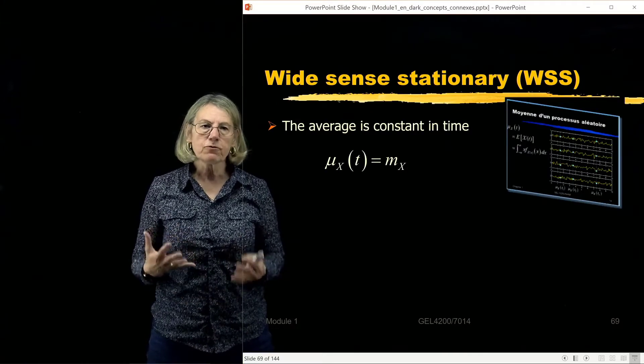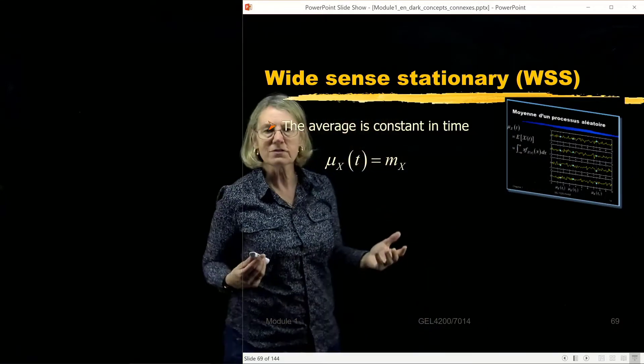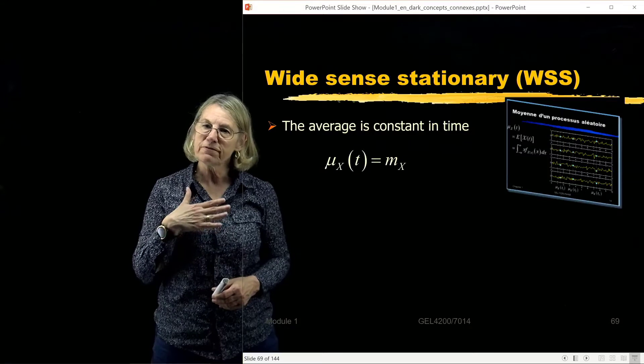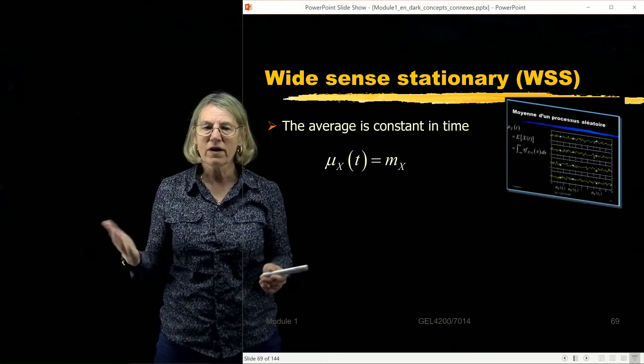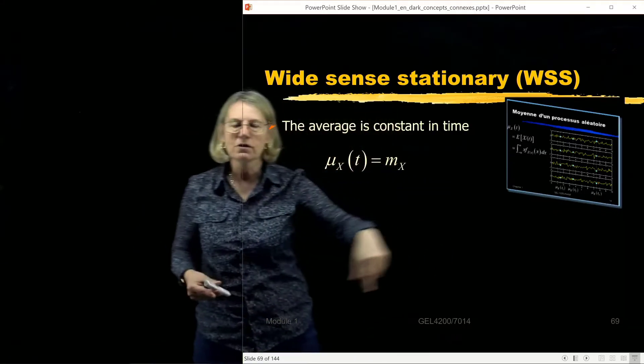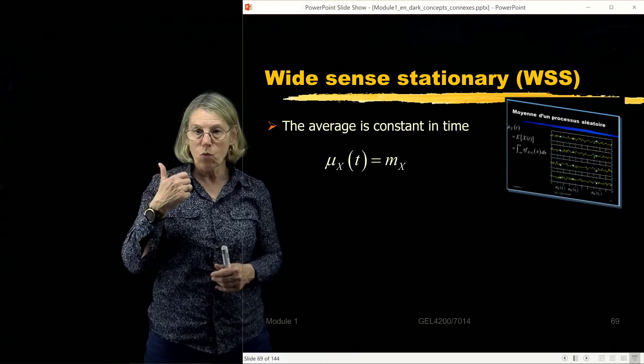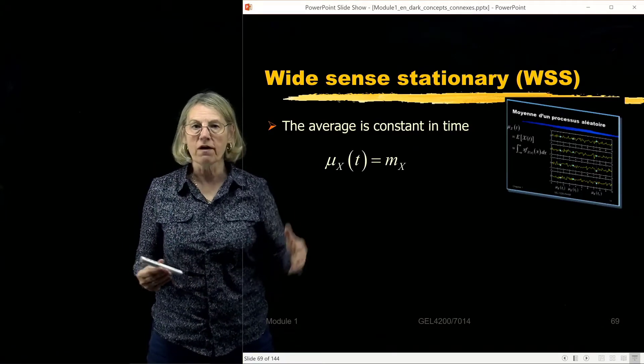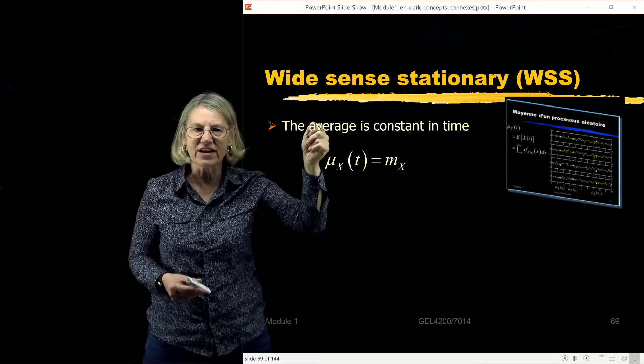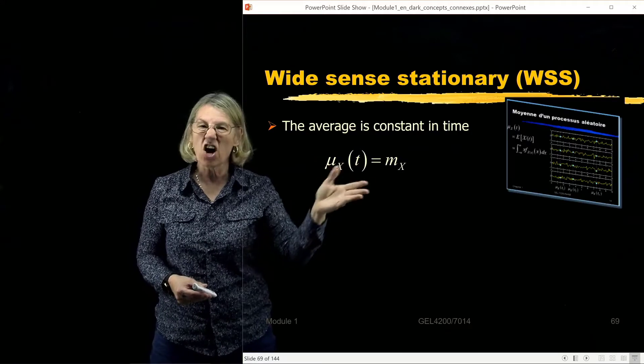We've seen before that the expected value of a random process in general is a function of time. Now suppose I restrict my attention to those random processes where that dependence on time doesn't exist. Where the mean value is the same no matter which instant of time I sample. That's one characteristic I'm going to look for in a wide sense stationary process. So one requirement for the process to be wide sense stationary is that the stochastic average, the expected value, is constant in time.